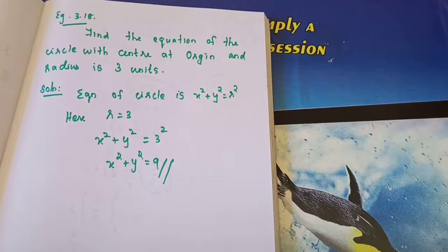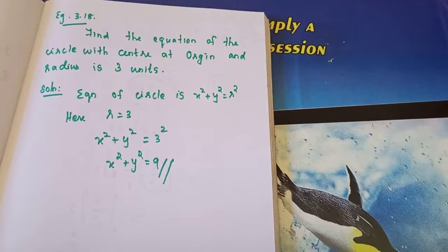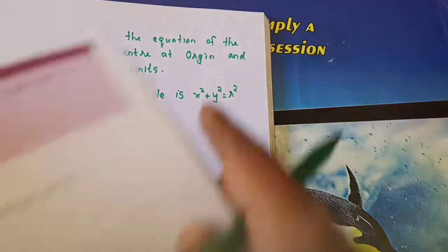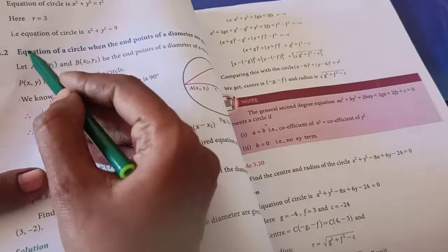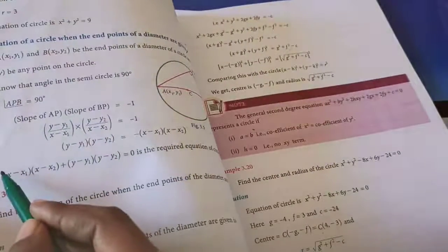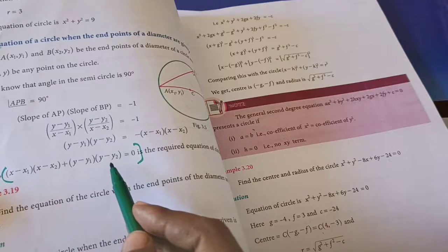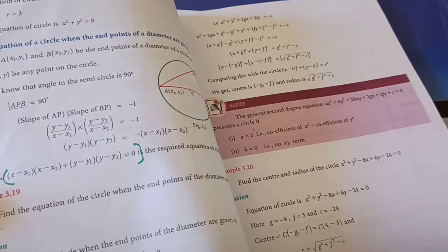Next we are going to learn another formula. Put the next heading: equation of a circle when the end points of the diameter are given. Please differentiate all the formulas and learn them — same as our 10th standard coordinate geometry. The formula is: x minus x1 into x minus x2 plus y minus y1 into y minus y2 equals 0.